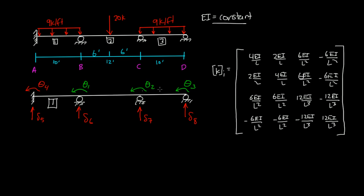The next thing, since I said EI is constant, I can actually pull out EI here, and then all these EI's go away. Since EI is constant, we can just pull it out of the matrix from all terms.